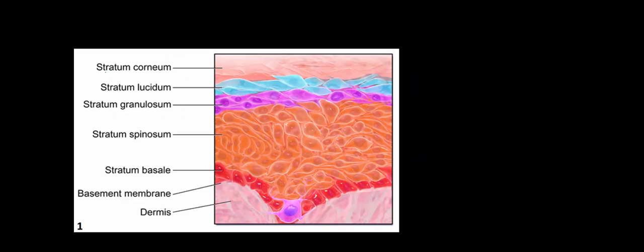Zooming in, you can now see each layer or stratum of the epidermis. We won't go through each of these layers in detail, but at the bottom, directly overlying the dermis, which is highlighted here in light pink, is the stratum basale, also more colloquially referred to as the basal cell layer, which is highlighted here in red.